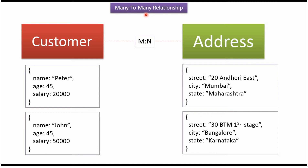In this video tutorial I will explain how to establish a many-to-many relationship in MongoDB. Here you can see the customer and the address. In a many-to-many relationship, one customer can have many addresses, and one address can have many customers.